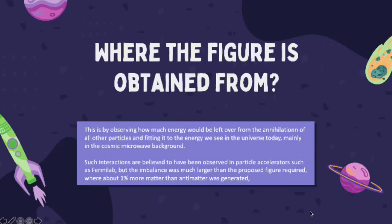You may be wondering where the figure of one in two times ten to the ninth power particles is obtained from. This is by observing how much energy would be left over from the annihilation of all of the particles, and comparing it to the energy we see in the universe today, namely in the cosmic microwave background. Such interactions are believed to have been observed in particular accelerators such as Fermilab, but the imbalance was much larger than the required figure — about 1% more matter than antimatter was generated. The reason for the discrepancy between the observed and predicted value is currently unexplained.